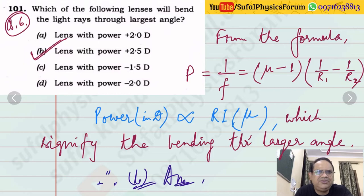Question number 6: Which lens will bend light rays through the largest angle? From the formula P is equal to 1 upon F, basically lens maker's formula 1 upon F is equal to mu minus 1 multiplied by 1 by R1 minus 1 by R2. And moreover, 1 upon F is P also, which is power. From this equation, P and mu are appearing, they are directly proportional to each other. So P is proportional to mu, which signifies bending through larger angle. Hence the higher the power, the higher the mu. Here the highest power is plus 2.5 diopters.